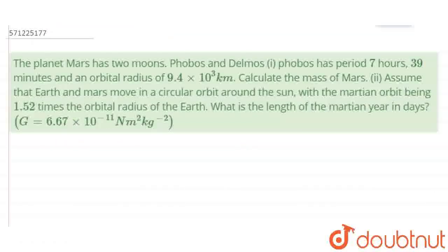Hello everyone. The question is: the planet Mars has two moons, Phobos and Deimos. Phobos has a period of 7 hours 39 minutes and an orbital radius of 9.4 into 10 to the power 3 km. Calculate the mass of Mars. In the second part, assume that Earth and Mars move in circular orbits around the Sun, with the Martian orbit being 1.52 times the orbital radius of the Earth.